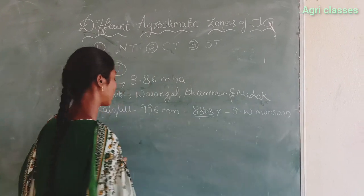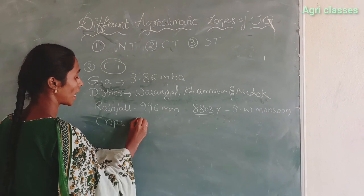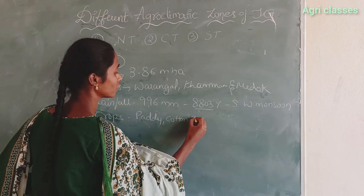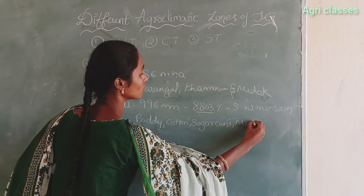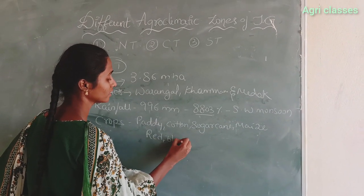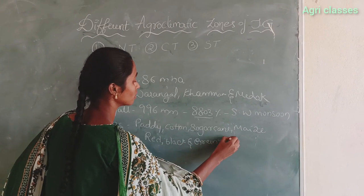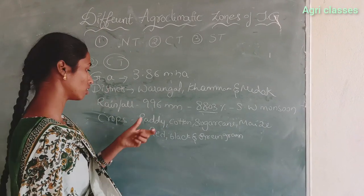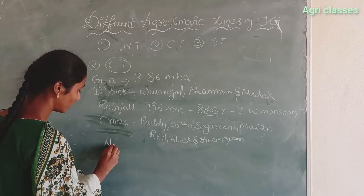The crops grown in the Central Telangana zone include sugarcane, cotton, maize, red gram, black gram, and green gram.